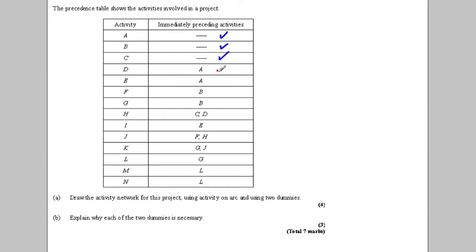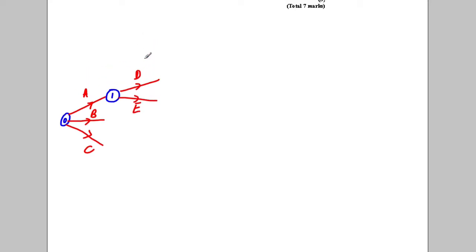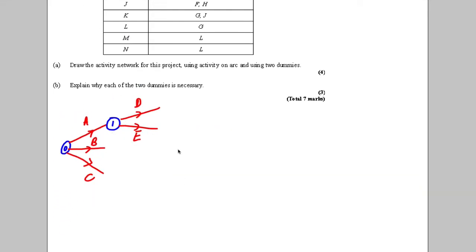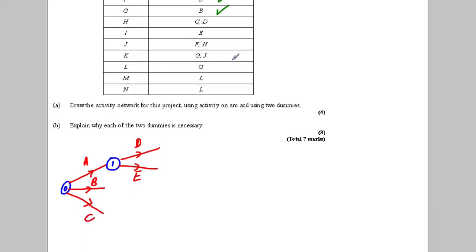D and E depend on A having been finished. So we're going to create the event that A is finished, and I'll have D and E coming out of that. Now F and G depend on B having finished. So we create an event for B having finished — node two — and we have F and G coming out of that.